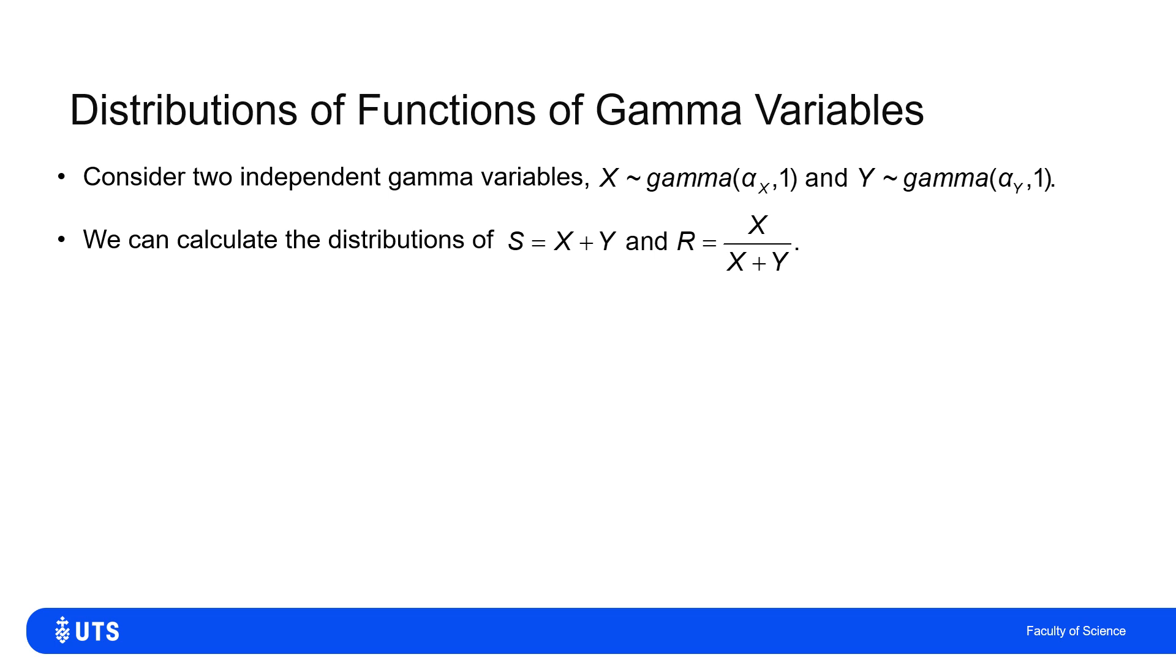So let me work out the sum of those, the distribution of S, which is X plus Y, and R, which is the ratio of X to the total of X and Y.